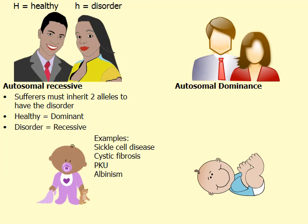What happens if the dad passes on the recessive allele and the mom also passes on the recessive allele? This combination is called homozygous recessive, and this is the only way a child could inherit an autosomal recessive disorder such as sickle cell or cystic fibrosis. You have to inherit not one recessive allele but two. That's one of the most basic rules of an autosomal recessive inheritance pattern.